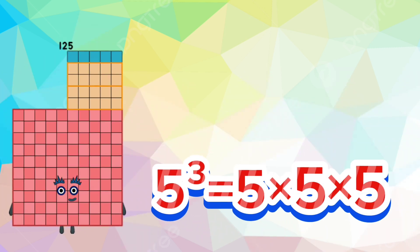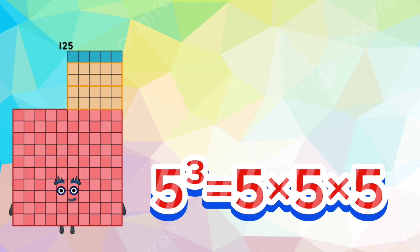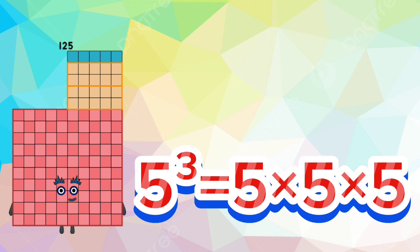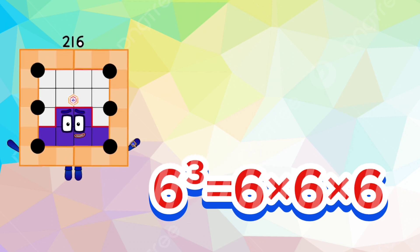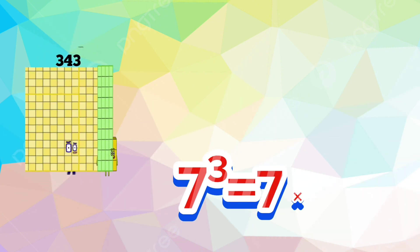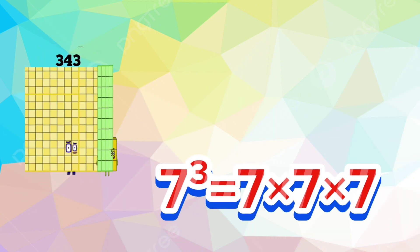One-hundred-twenty-five: five cube is five times five times five. Two-hundred-sixteen: six cube is six times six times six. Three-hundred-forty-three: seven cube is seven times seven times seven.